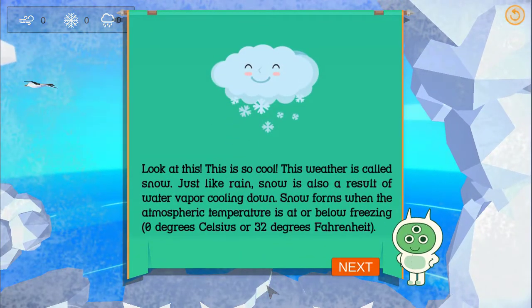Look at this! This is so cool! This weather is called snow. Just like rain, snow is also a result of water vapor cooling down. Snow forms when the atmospheric temperature is at or below freezing, 0 degrees Celsius or 32 degrees Fahrenheit.